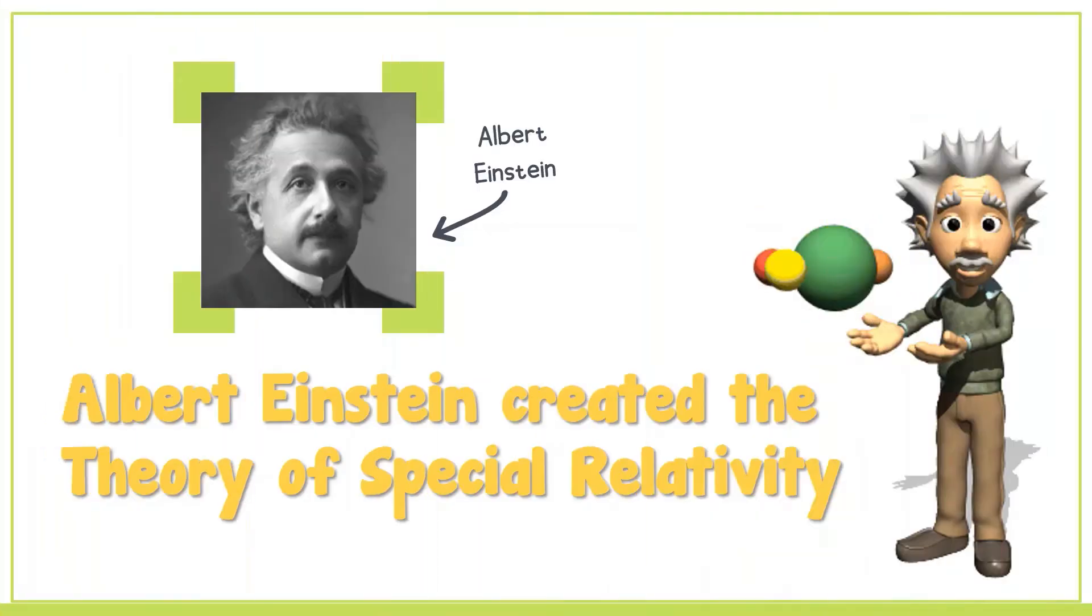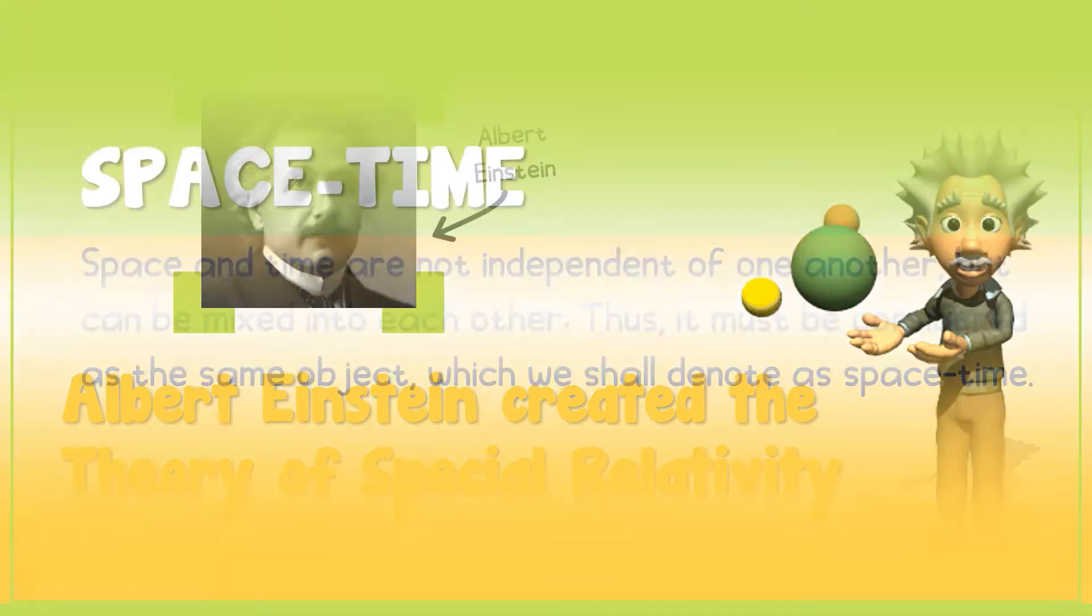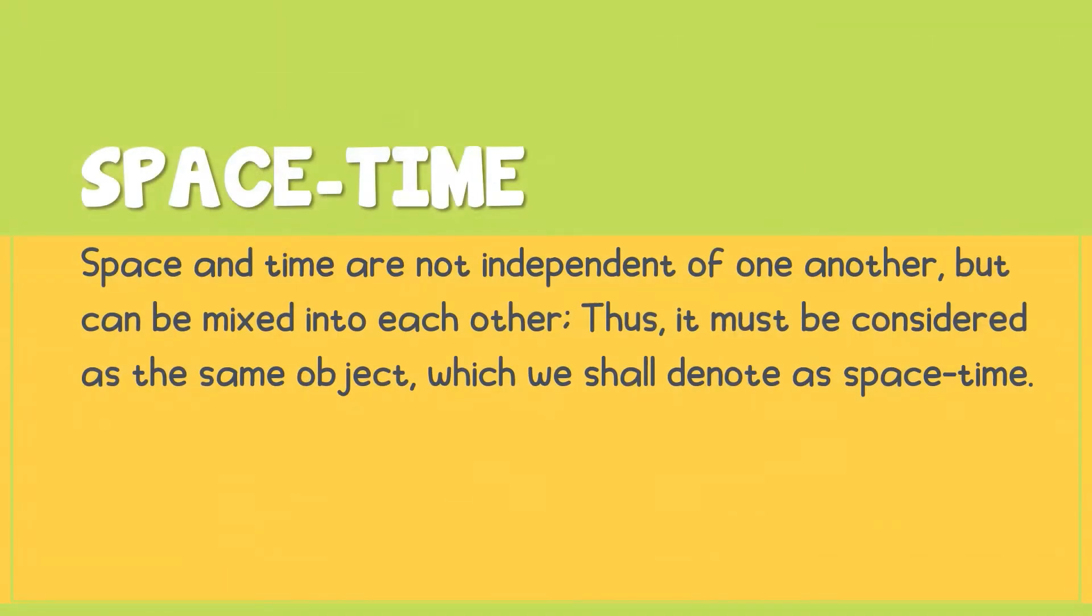In the 1900s, Albert Einstein created the theory of special relativity, which contradicted Newtonian mechanics and was inspired by Maxwell's equations. Special relativity states that space and time are not independent of one another and they can be mixed. Thus, it must be considered as the same object, which we will call space-time.